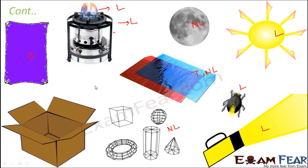Cardboard sheets are opaque objects and non-luminous because they produce no light of their own. That's how you can classify objects around yourself into opaque, transparent or translucent, as well as into luminous and non-luminous objects.